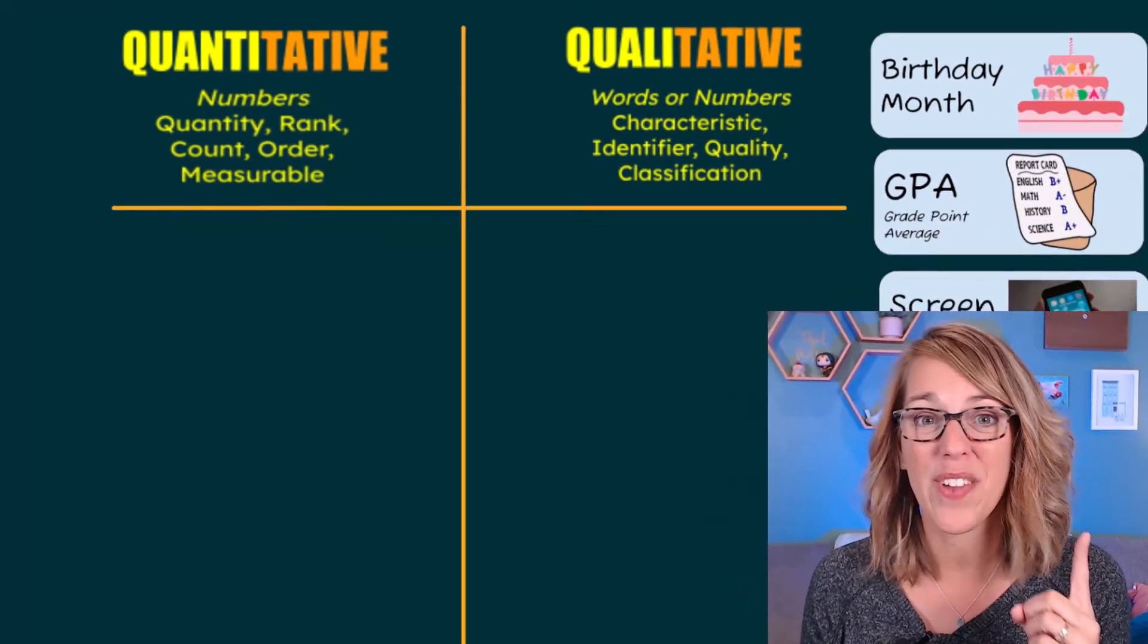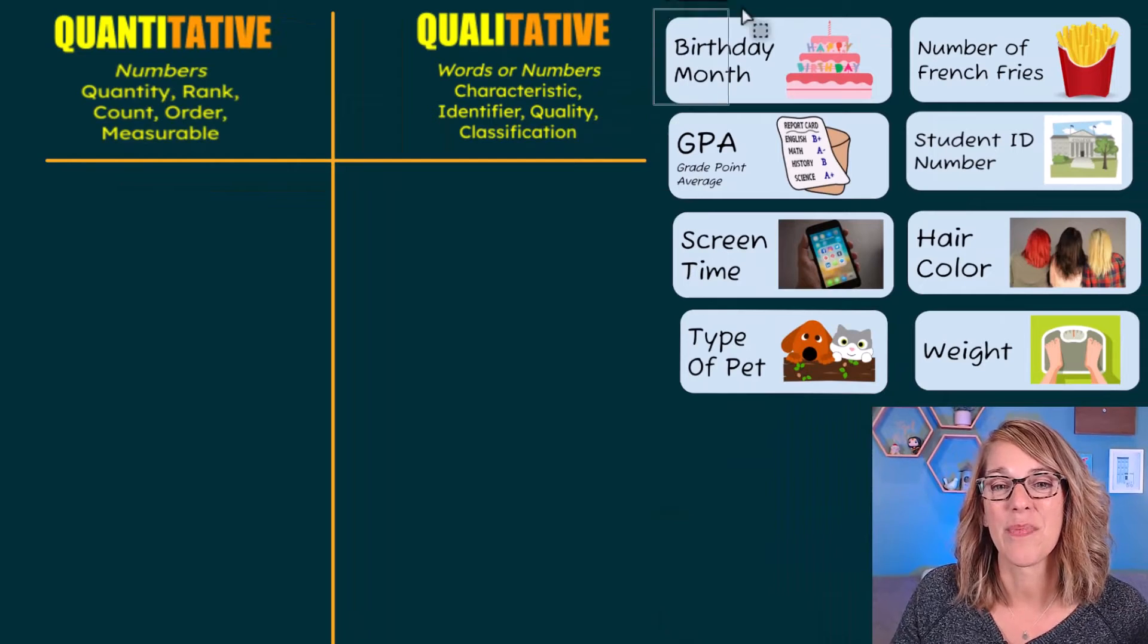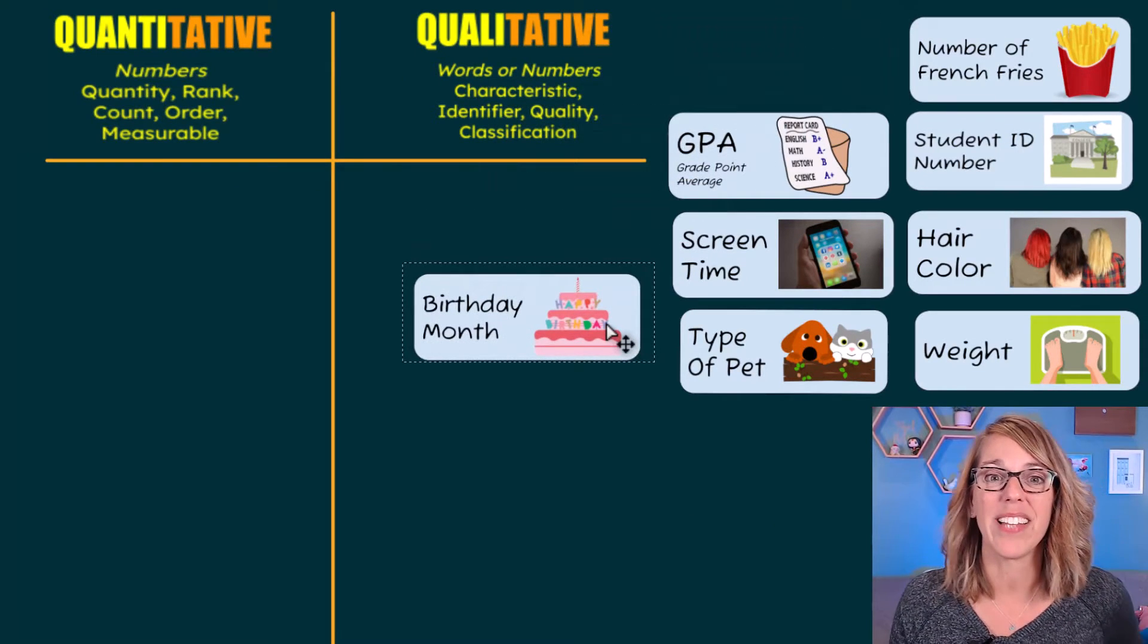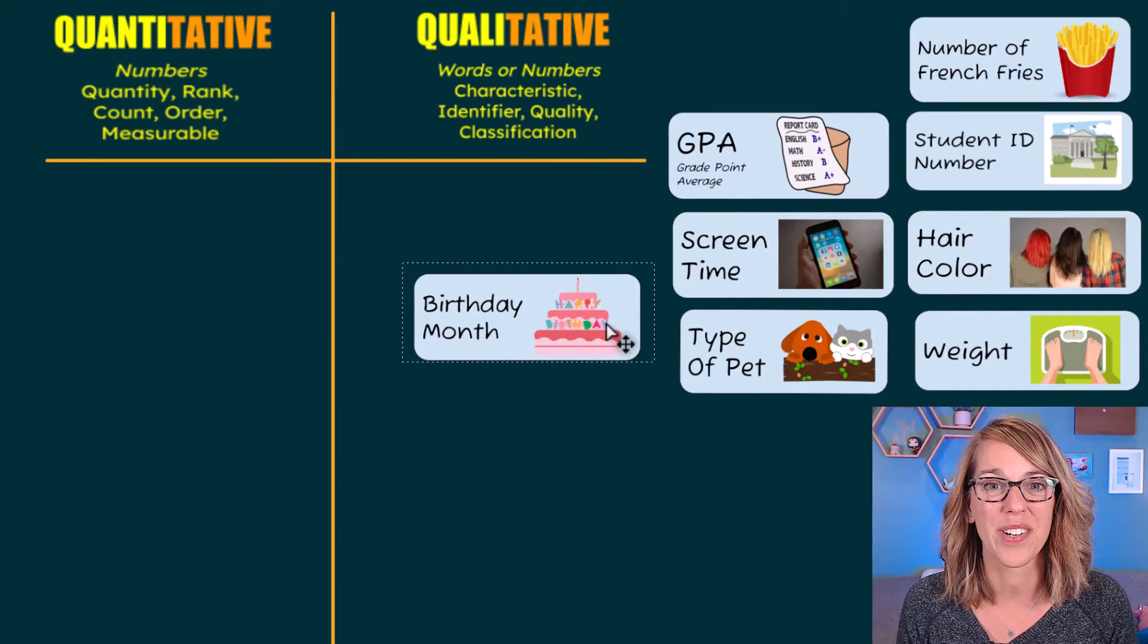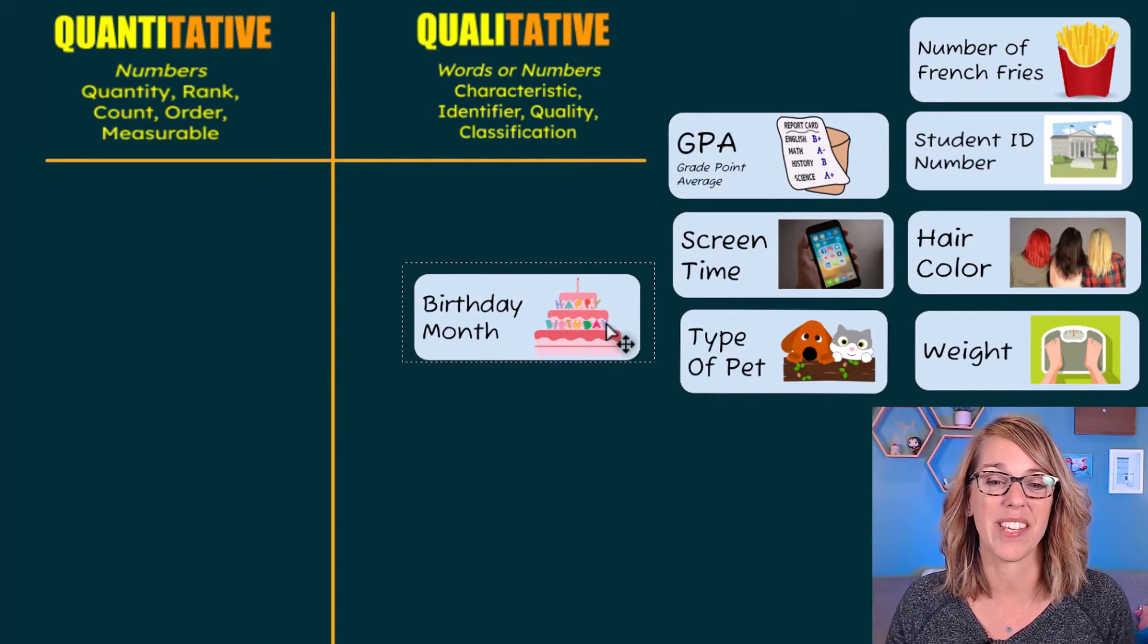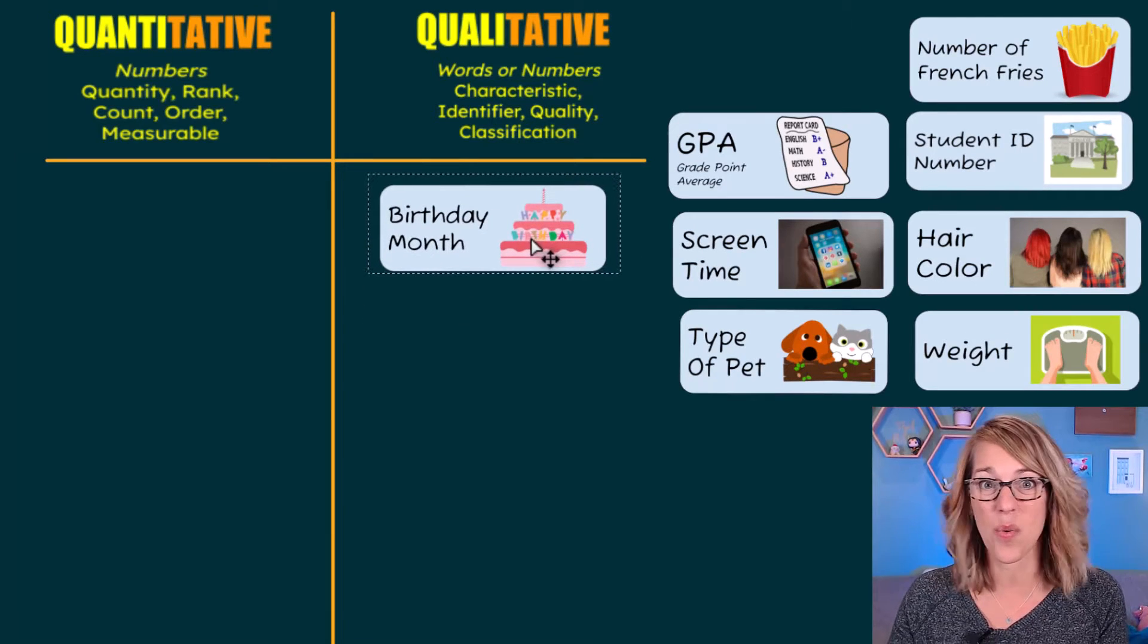Now I've got a bunch of variables here. Let's run through each of them. Let's start with birthday month. So birthday month would be like January, February, which month were you born? It is a word, and it identifies the month that you were born. So we're going to go ahead and put that under qualitative. It's not a quantity.